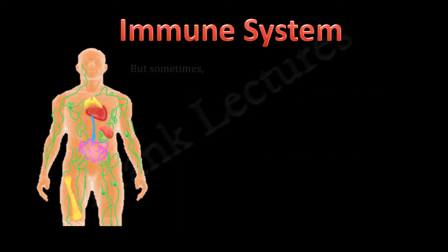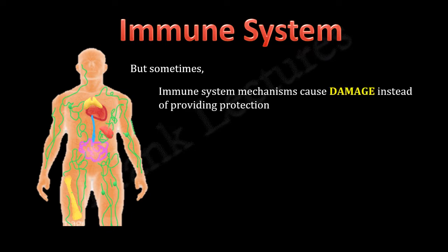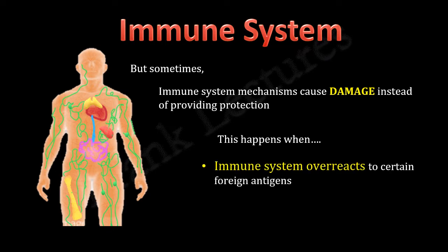But sometimes, the defense mechanisms of our body can cause damage instead of providing protection. This happens in two situations. First, when the immune system overreacts to certain foreign antigens. Second, when mechanisms of self-tolerance fail.